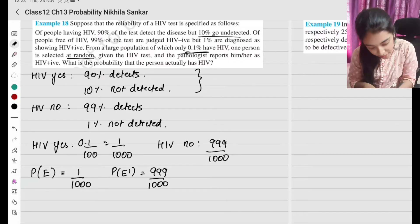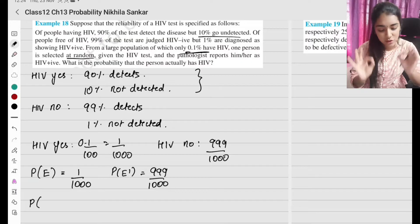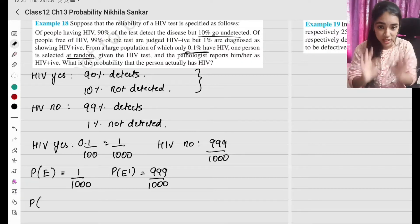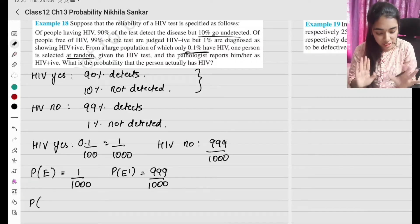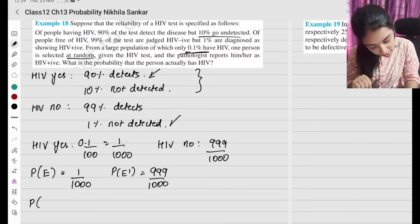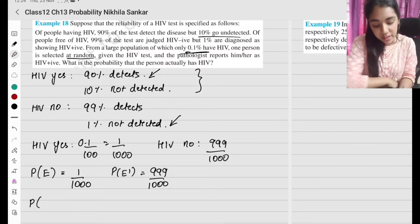Let's interpret the question using probability symbols. The probability that the person is tested HIV positive given that he or she is actually having HIV — this corresponds to the test detecting correctly.